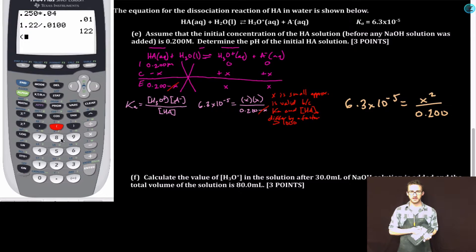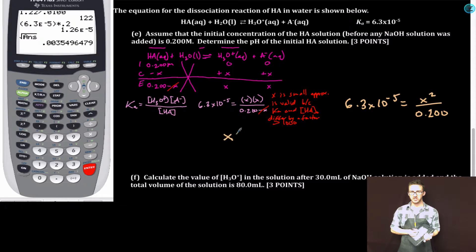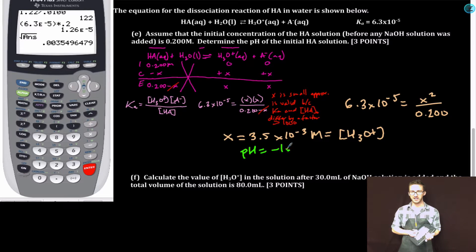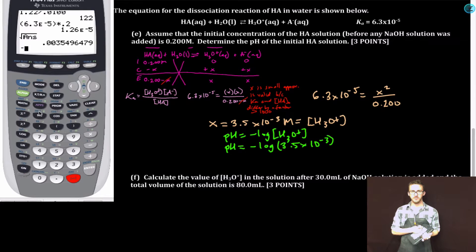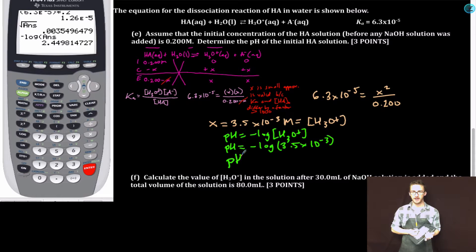Calculator time. 6.3, second heat, negative 5, close parentheses, times 0.2, answer. Second square root, second answer, answer. X equals 3.5 times 10 to the minus 3 molar. That is our hydronium ion concentration. To solve for the pH, we're just going to take the negative log of our hydronium ion concentration, which we just determined to be 3.5 times 10 to the minus 3. Negative log, second answer, enter. pH equals 2.45.